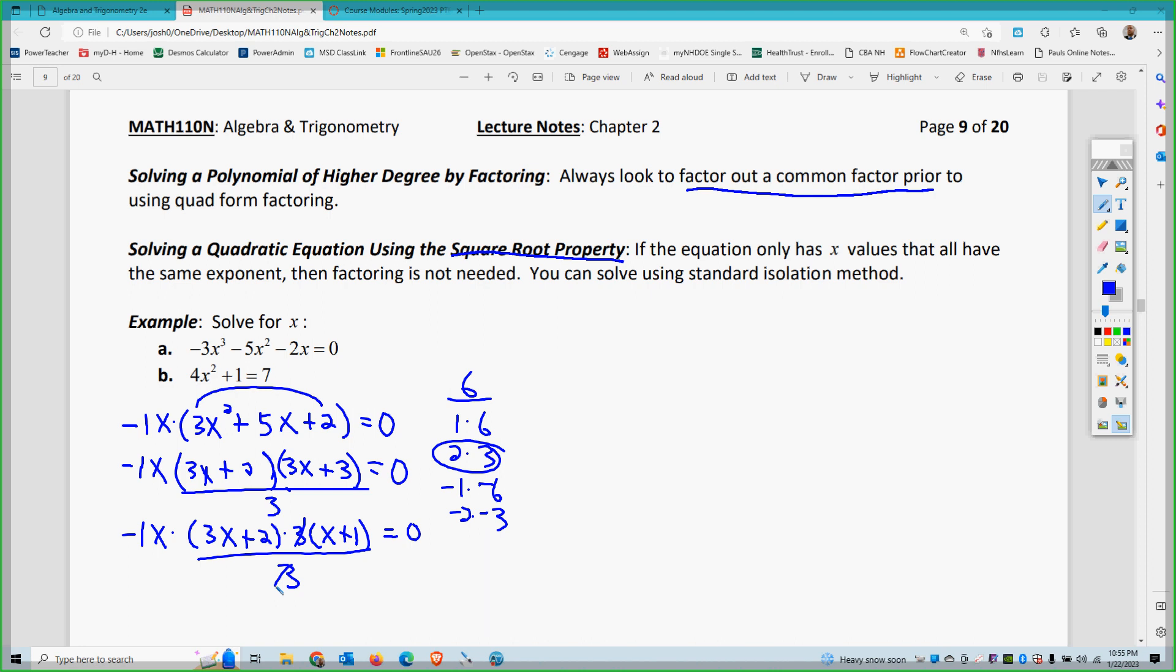So negative 1x times 3x plus 2 times 3x plus 1, the 3x and the 3 have a common factor in 3, so that comes out. So now I have negative 1x is equal to 0, 3x plus 2 is equal to 0, and x plus 1 is equal to 0. So x is 0, x equals negative 2 thirds, and x equals negative 1. I get 3 answers. You're like, 3 answers? I'm only getting 2 in the past. Well yeah, but this was a third power problem.